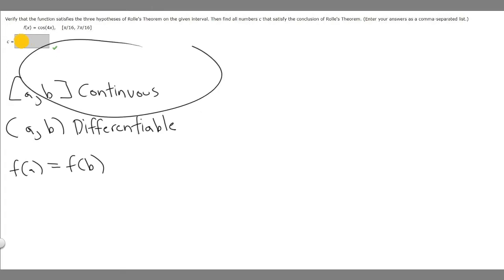Let's first make sure that this function satisfies the three hypotheses. The first one is that it has to be continuous on the closed interval A to B. So is it continuous? Any of these numbers here we could plug in and we'd get a value, then that means it's continuous.